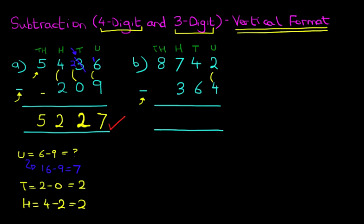Starting on the right-hand side, we have the units. Two minus four. Now because two is smaller than four, this is something we cannot do. We're going to take one from the tens. So let's cross out the four. Four minus one is three, and the one we have taken from here we're going to move across to the units column. So the units has now become 12 minus four. 12 minus four is eight. So that's the units column done.